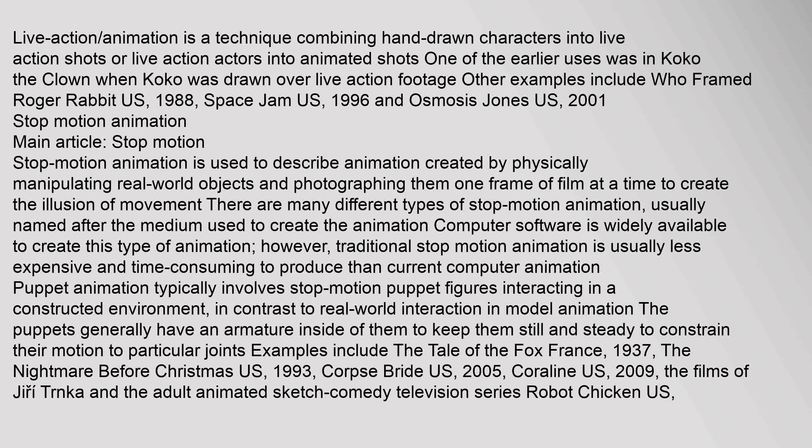Stop motion animation is created by physically manipulating real-world objects and photographing them one frame at a time to create the illusion of movement. There are many different types of stop motion animation, usually named after the medium used. Traditional stop motion animation is generally less expensive and time-consuming to produce than current computer animation. Puppet animation typically involves stop motion puppet figures interacting in a constructed environment; the puppets generally have an armature inside to keep them steady and constrain motion to particular joints.